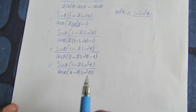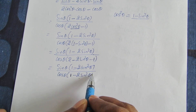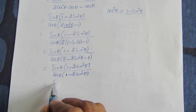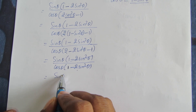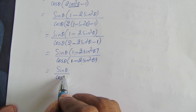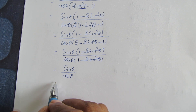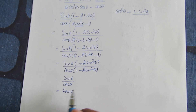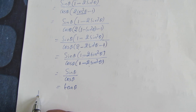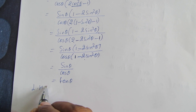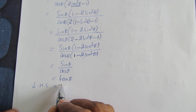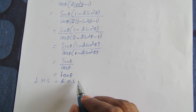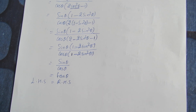Now the factor (1 minus 2 sin square theta) is common in numerator and denominator, so we cancel it. The remaining expression is sin theta by cos theta, which is nothing but tan theta. So left hand side equals right hand side — hence proved.